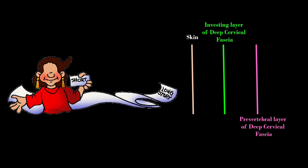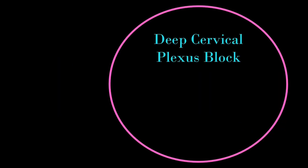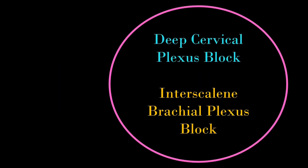To summarize: the superficial cervical plexus block is performed superficial to the investing layer of deep cervical fascia; the intermediate cervical plexus block is performed deep to the investing layer but superficial to the prevertebral layer; and the deep cervical plexus block is performed deep to the prevertebral layer. Note that both the deep cervical plexus block and the interscalene brachial plexus block require puncture of the prevertebral fascia.